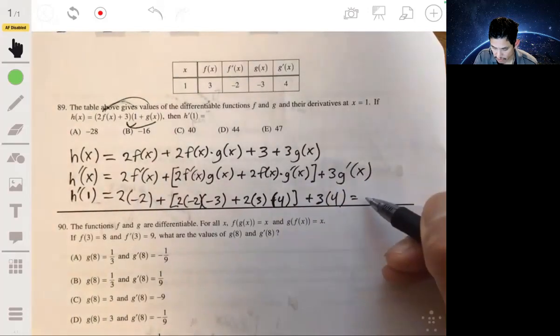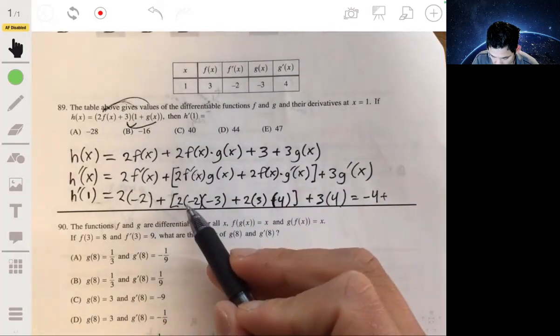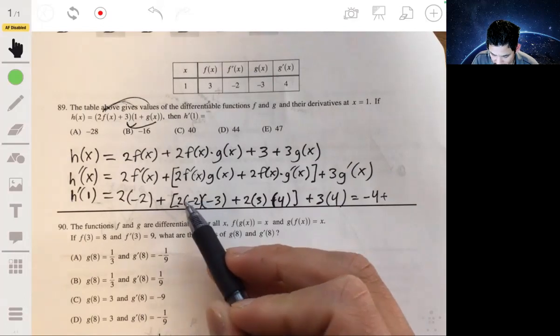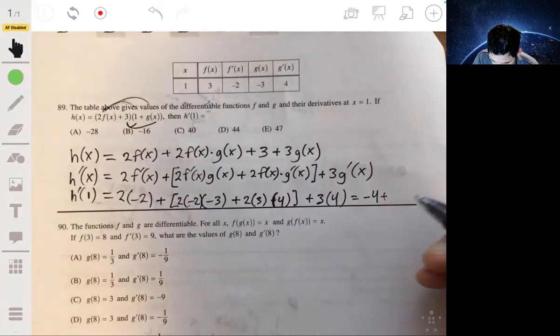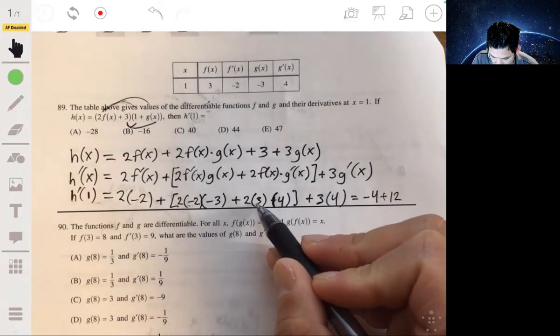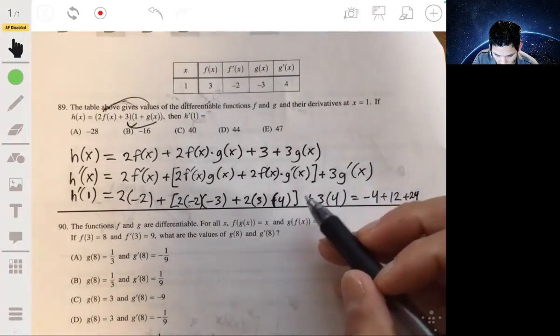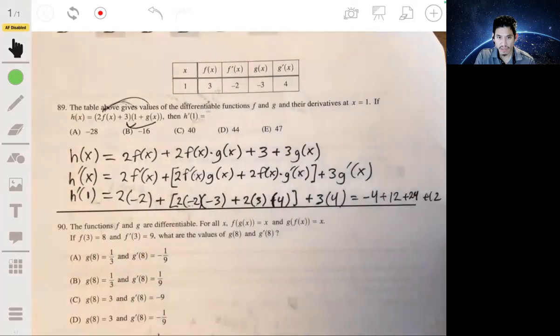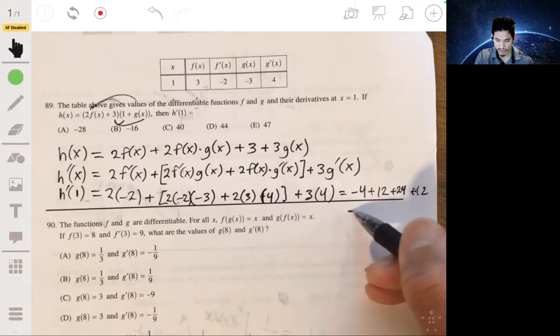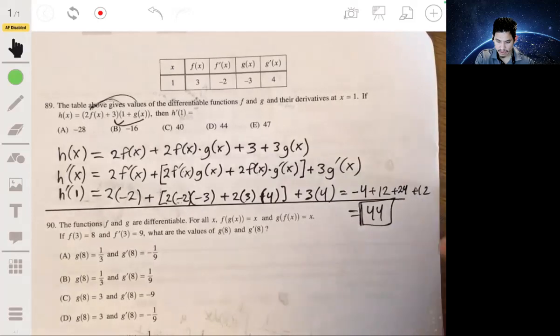Doing the math, negative 4 plus 4, negative 4, so 12, plus 12, plus 24, plus 12 again. And I hope I didn't make a mistake. I think we're good, and this equals just 44. So your answer is D.